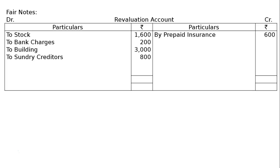Then by prepaid insurance Rs.600. An expense of Rs.1200 for insurance premium was debited in the profit and loss account of 2016-17, but only Rs.600 of this applied to the period after 31st March. So by prepaid insurance Rs.600 — out of Rs.1200, Rs.600 belongs to the forthcoming year.